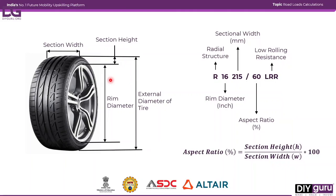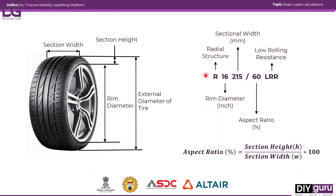The number 16 after 'R' is the rim diameter — that's the size of the wheel — given in inches. Following that, 215 is the sectional width of the tire, given in millimeters. So the vehicle has a radial structure, a rim diameter of 16 inches, and a sectional width of 215 mm.